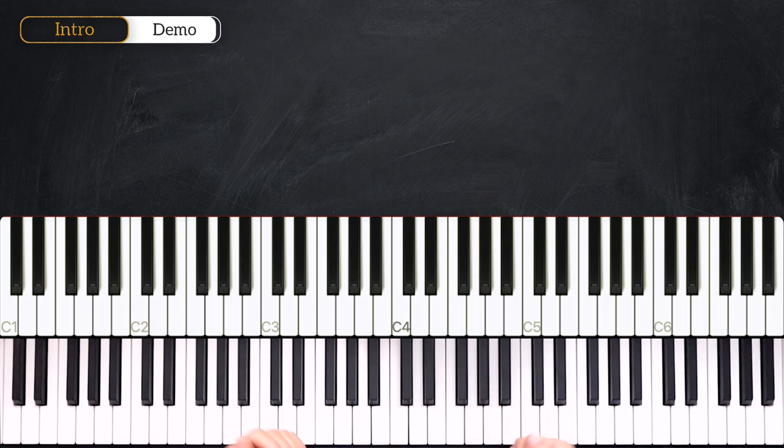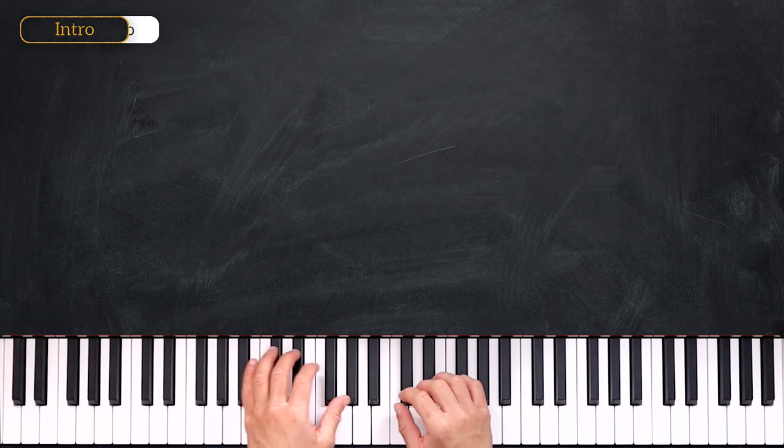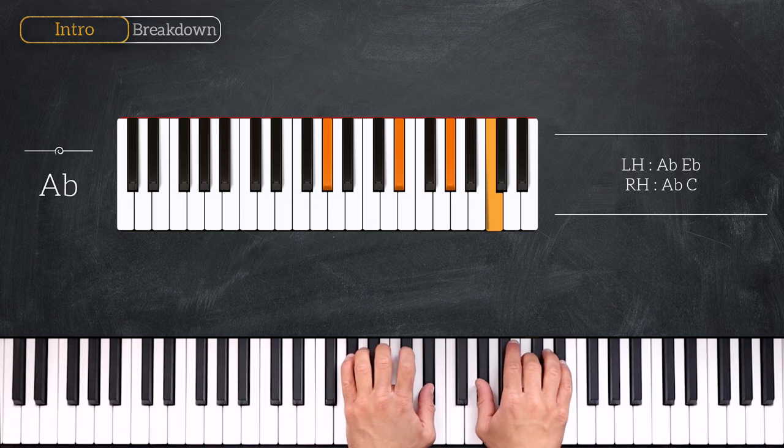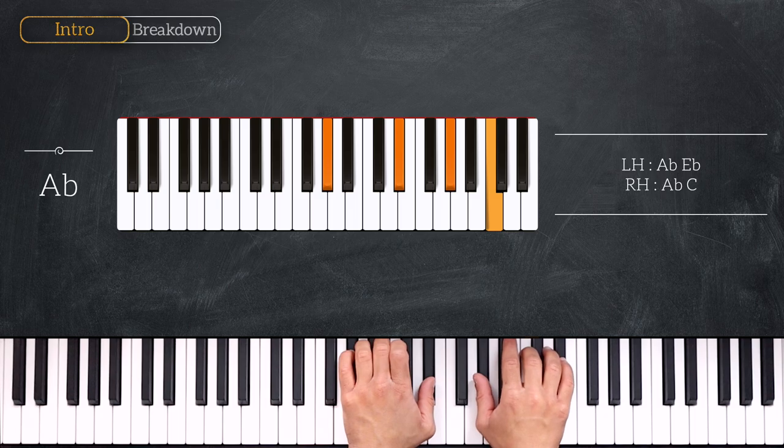So we have four flats: B, E, A and D. We start on the first degree playing this Ab major chord. We have Ab, Eb on the left and Ab, C on the right.